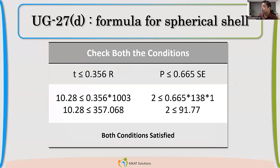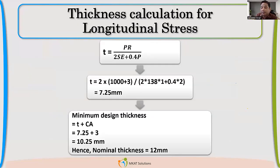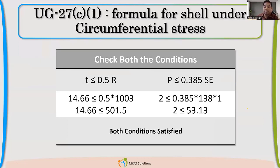So now Sanjay is asking, what is the basis for condition P less than 0.385 SE. Whatever, like it's given for this circumferential stress formula, it's 0.385 SE. So if you just see this, if you just see carefully, what can be the basis from S is the allowable stress. If you multiply this allowable stress with 0.385, the pressure which is coming, the pressure is just a minute. Yes. I have muted.